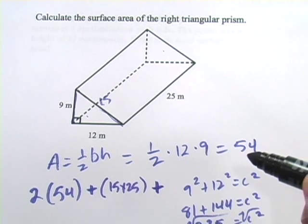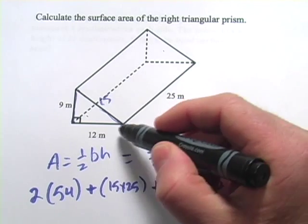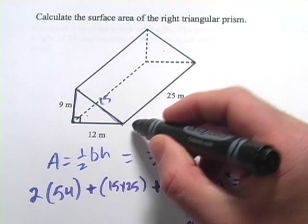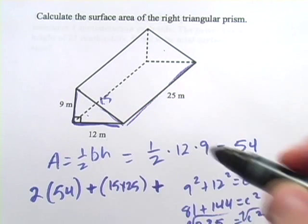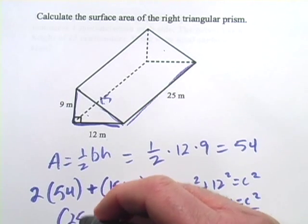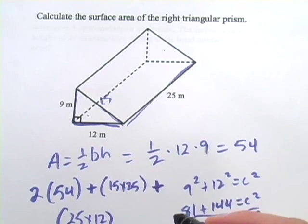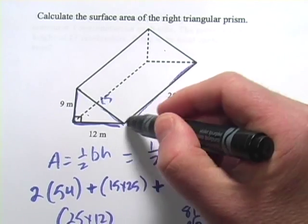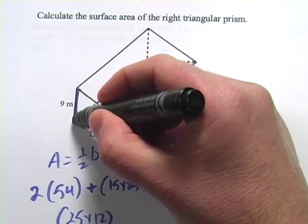Now we've got two more sides. Let's go with the one that's on the bottom. That is 25 long and 12 wide, so that's 25 by 12. And then finally, this back edge here, it's also 25 long and it's 9 wide.